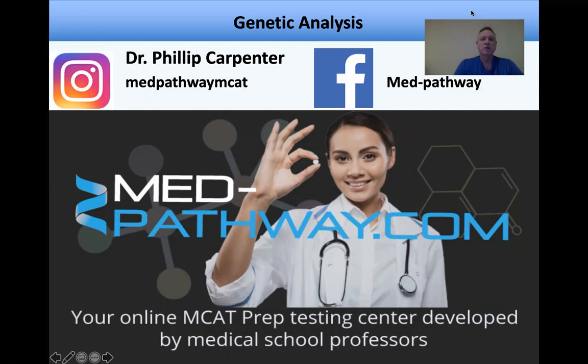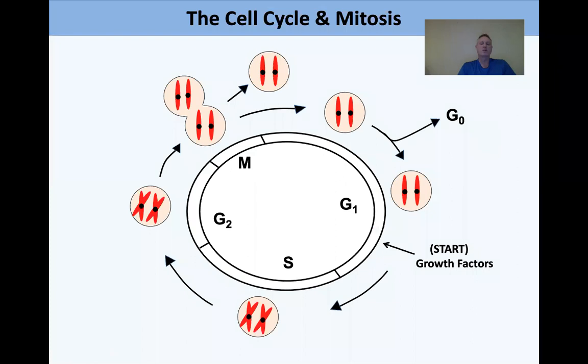When you think about genetics, you probably think about chromosomes. This slide shows the cell cycle and mitosis. At G1, if growth conditions are proper, you go into S phase. Here are two sister chromatids attached by a common centromere as a consequence of DNA replication.